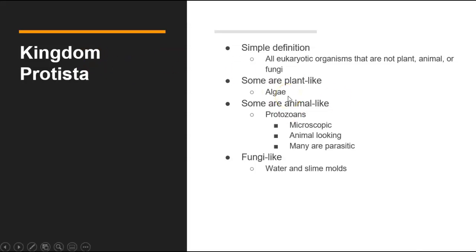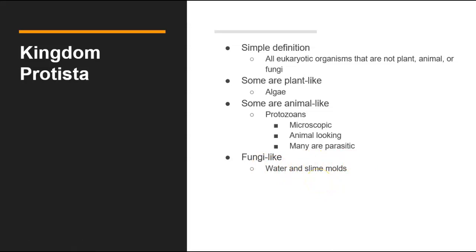Some of them are going to be plant-like. An example of that are algae — they're able to go through photosynthesis. Some are going to have animal-like characteristics such as the protozoans, which are microscopic and animal-looking, and some of them are parasitic. Some are going to be fungi-like such as slime mold. Slime mold is not the same thing as the food mold that you find in your refrigerator — slime mold is actually a type of protist.